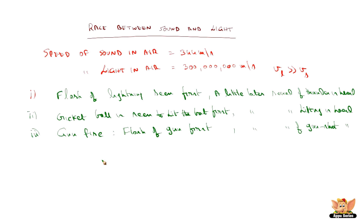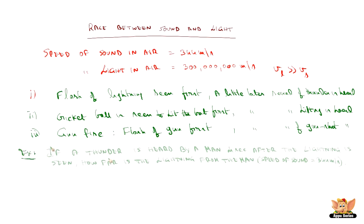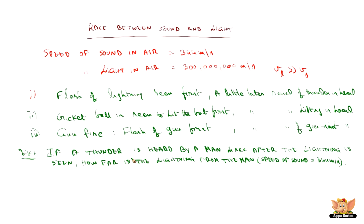Now let us look at a numerical example. If a thunder is heard by a man four seconds after the lightning is seen, how far is the lightning from the man? The speed of sound is 344 meters per second. So, lightning is seen first and four seconds later the thunder is heard. How far is the lightning from the man?